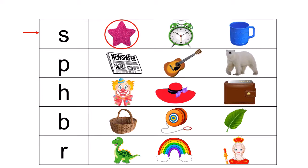Next letter is P, and P says P. And the pictures are newspaper, guitar, polar bear. Newspaper, guitar, polar bear. Yes! Polar bear begins with the P sound. Very good. Superb KGA!